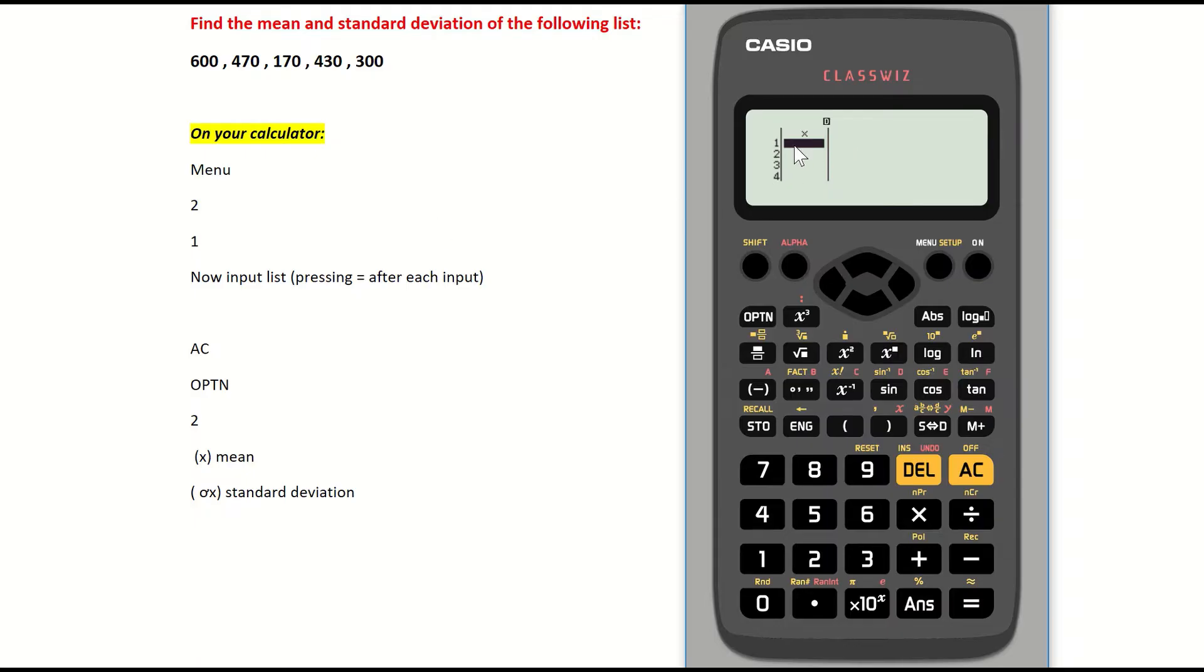A table appears and I now need to input the data. The list of numbers is over here to the left, these five numbers. The first number I'm going to key in is 600. I now have to press the equals key. You have to press equals in order for that number to appear in your table.